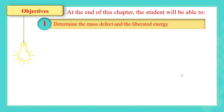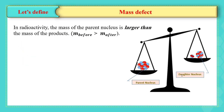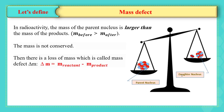It is noticed that the mass of the parent nucleus that undergoes radioactivity is larger than the mass of the product. So we can say that the mass is not conserved and there is a loss in mass. This loss in mass is known as mass defect, and it is denoted by delta m. It is equal to the difference in mass between the reactant mass and the product mass.